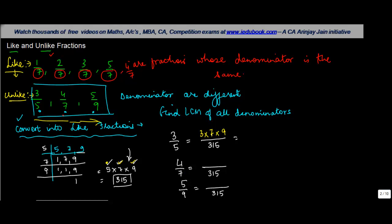So 3 into 7 is 21, 21 into 9 is 189 upon 315. Again in this case, 315 is equal to 5 into 7 into 9. The denominator here is 7, so 7 has been actually multiplied by 5 and 9 to get 315.